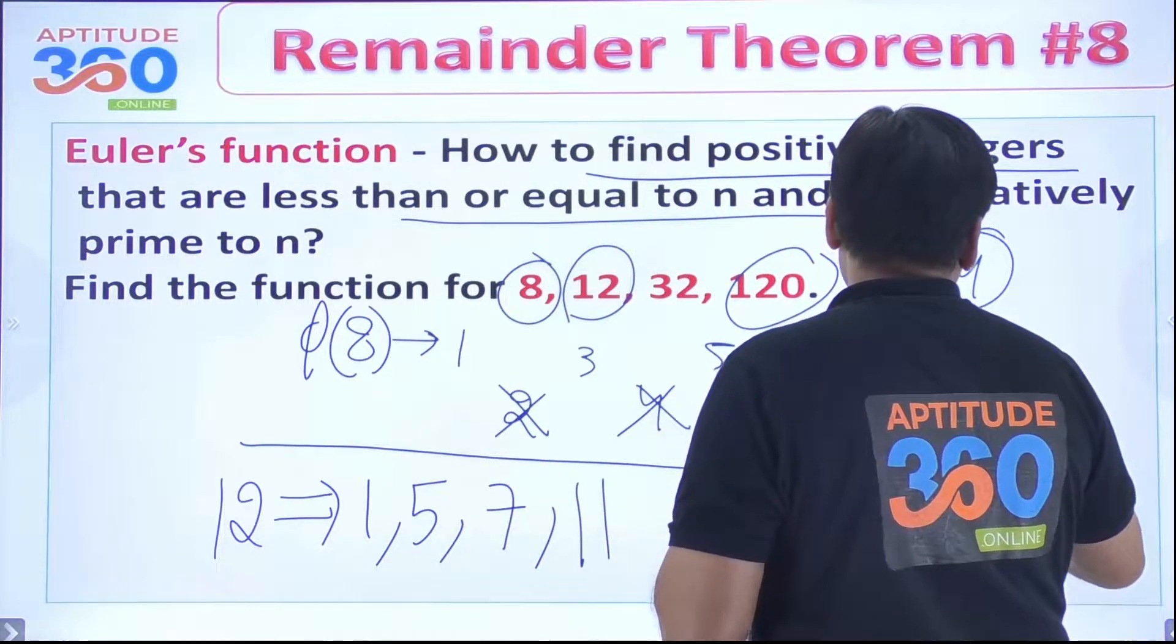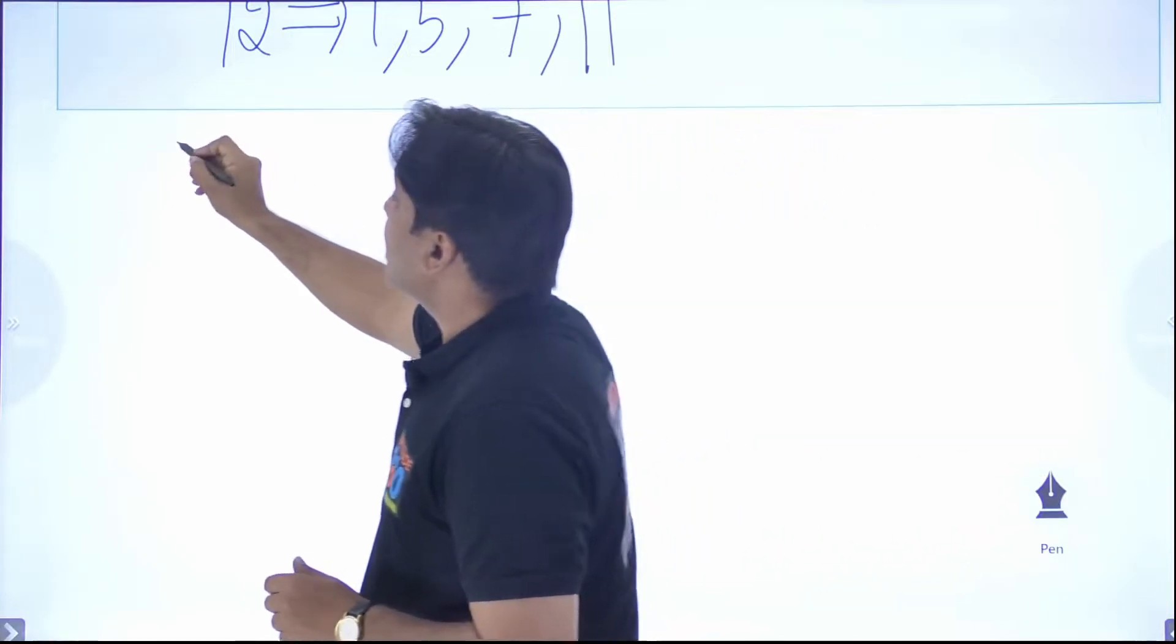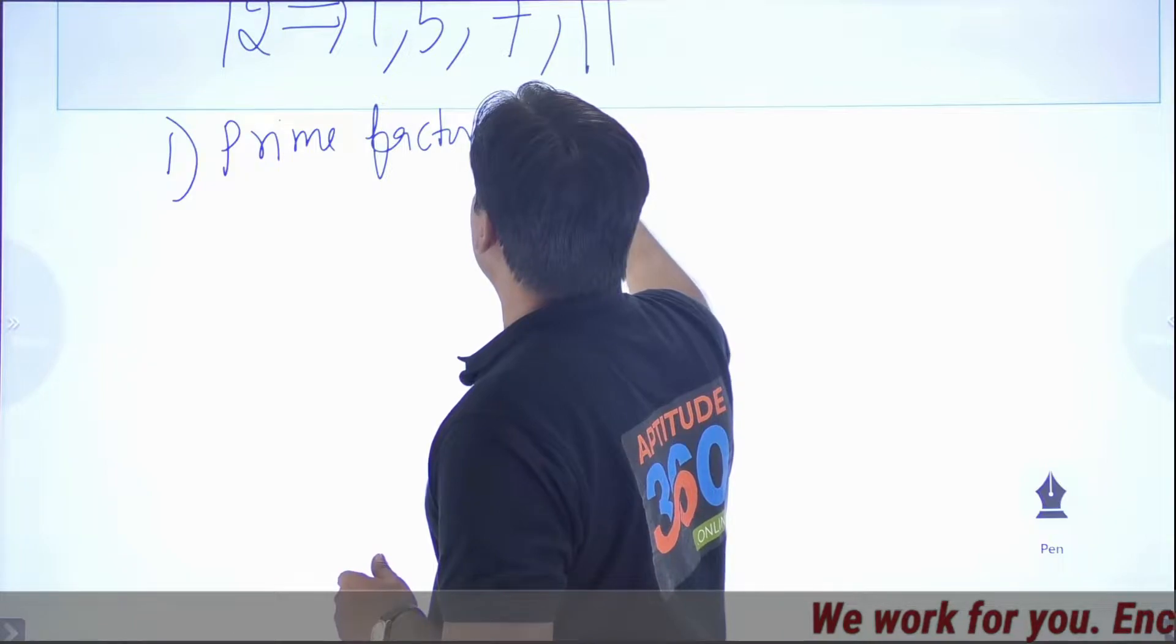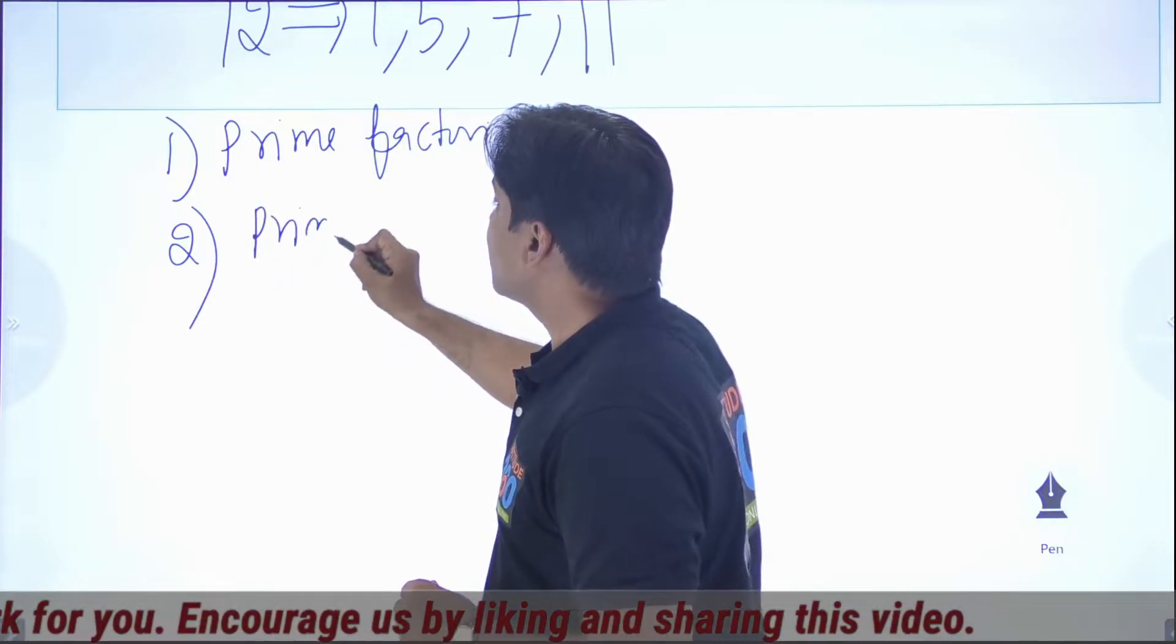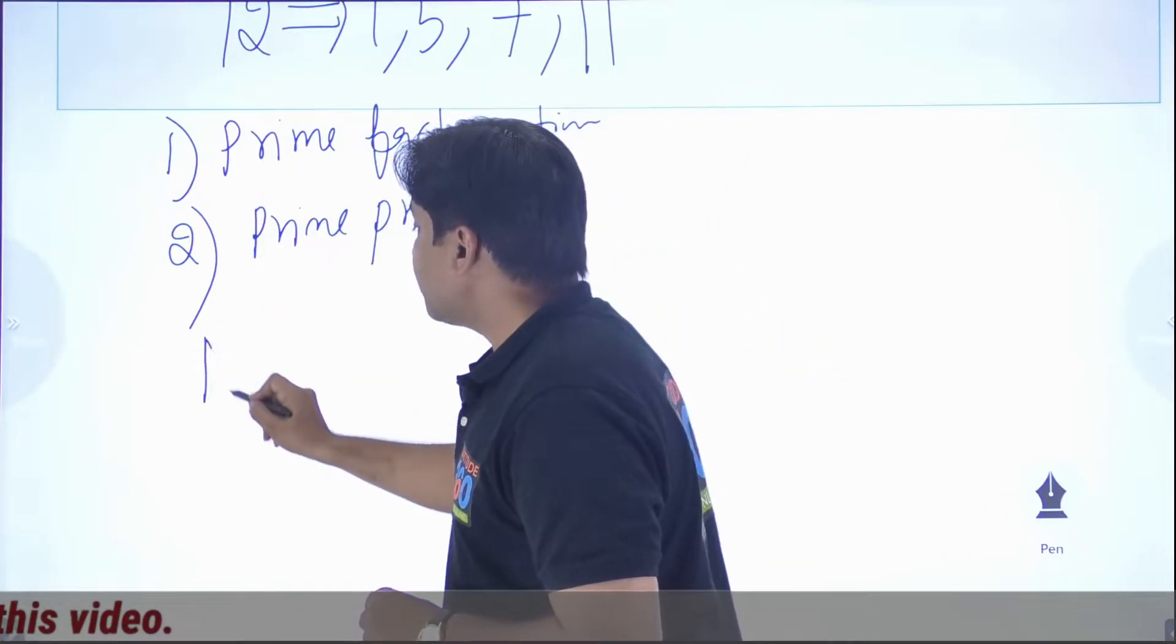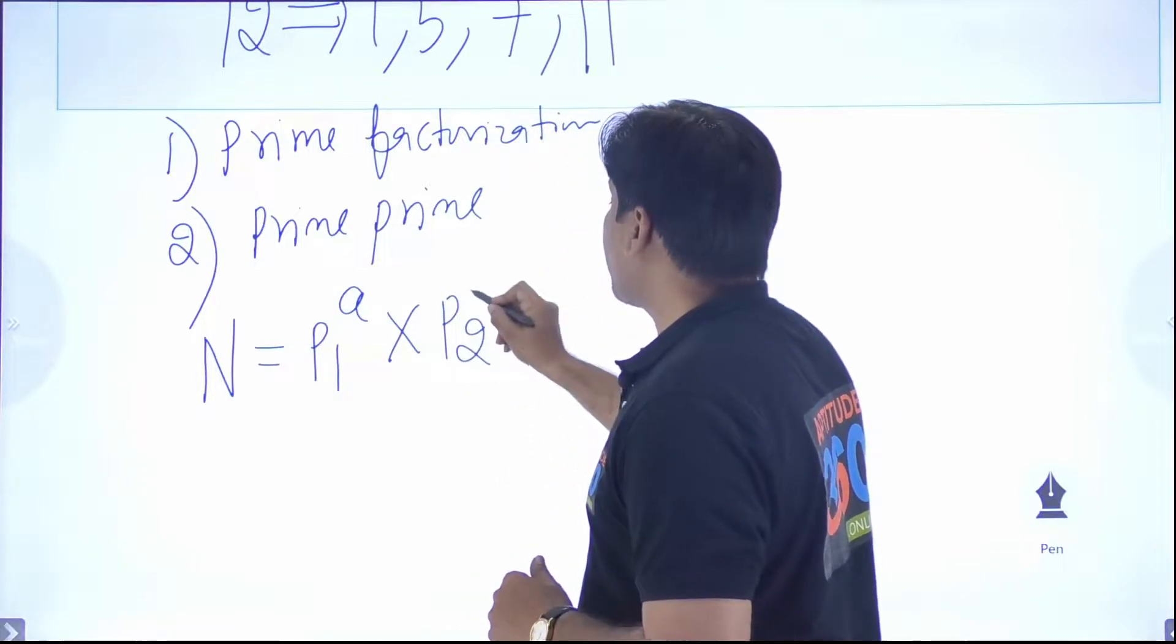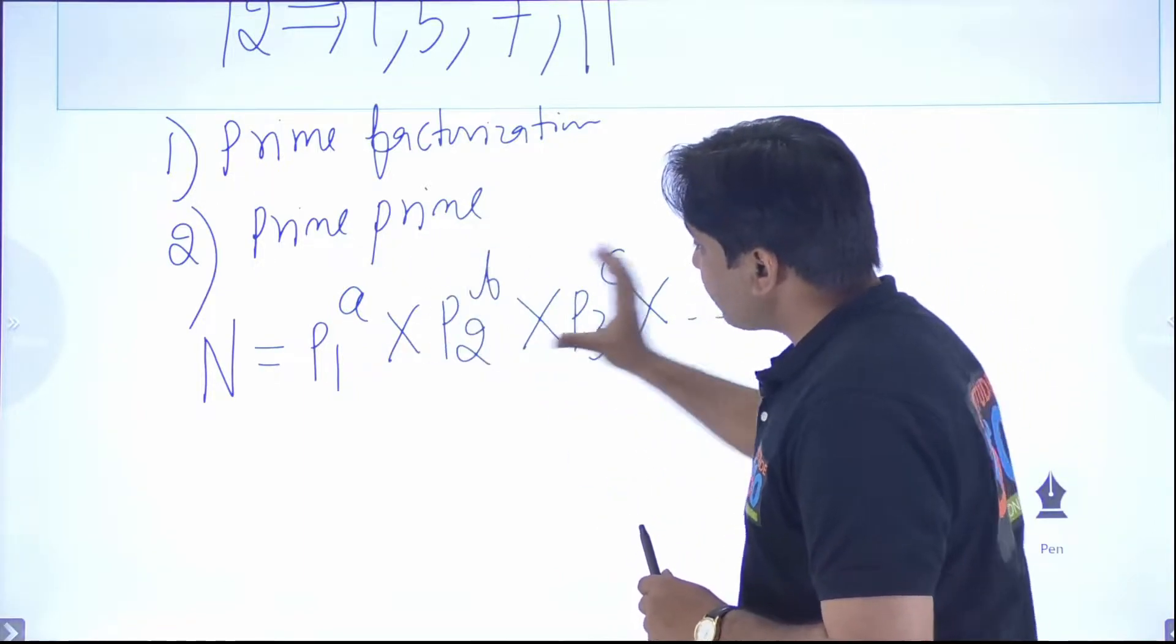How do we simplify this thing? In order to simplify this, your step number 1 is do the prime factorization of any number. Everybody would be able to find out what is the prime factorization of a number. And the second is just concentrate on the prime numbers. Say for example, I have got this is my number n. And I do the prime factorization of it. It says that prime number p1 is to power a, and then prime number p2 is to power b, and prime number p3 is to power c, and so forth and so on. This is the prime factorization.